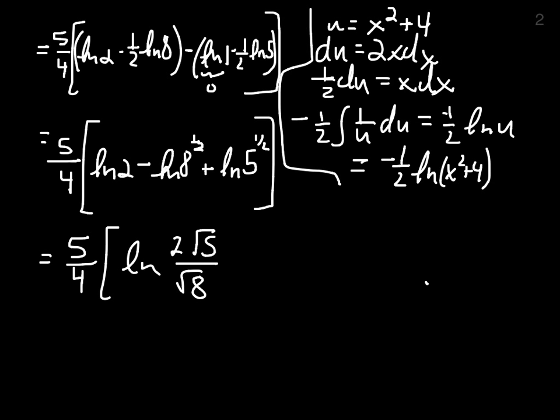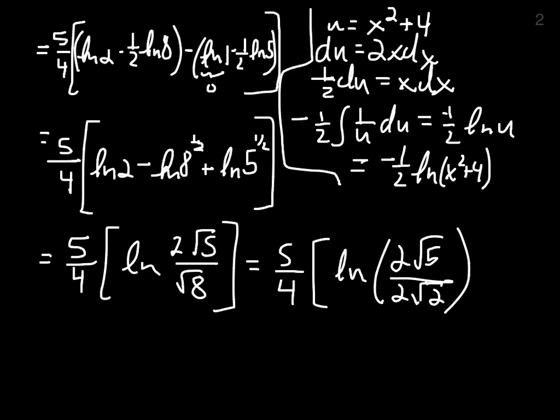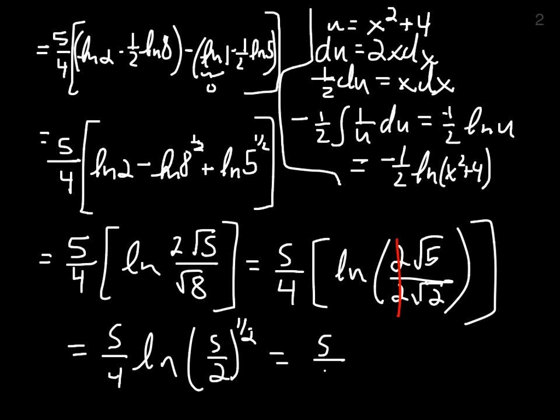Okay, the root of 8 is 2 times the square root of 2. And so we're going to get 5 fourths the natural log of 2 root 5 over 2 root 2. Those two guys canceling each other out to get 5 fourths the natural log of 5 halves, but that's to the 1 half. Which we can then pull down in front for the final answer, 5 eighths the natural log of 5 halves.